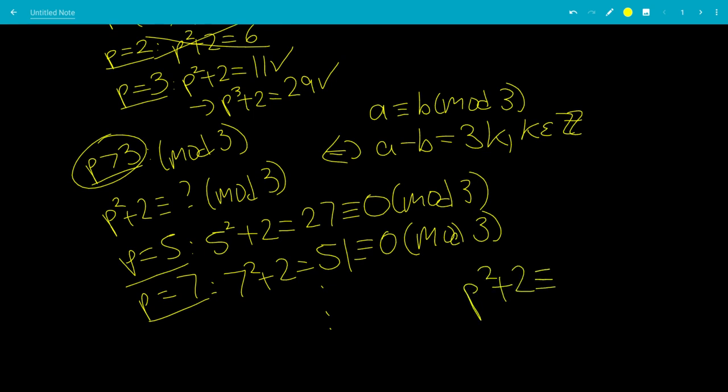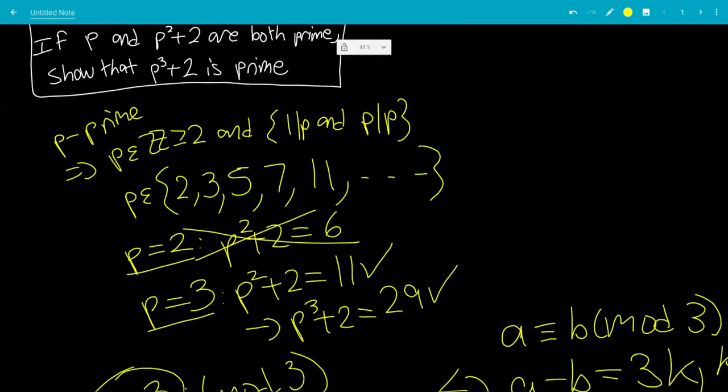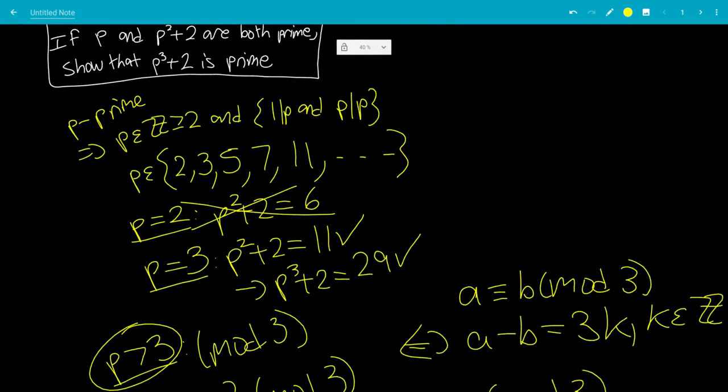Basically, you get p squared plus 2 is congruent to 0 mod 3. When p is a prime greater than 3, this means that p squared plus 2 is not prime. So that finishes the question, because there are no more primes where this is possible. p equals 3 is the only case.